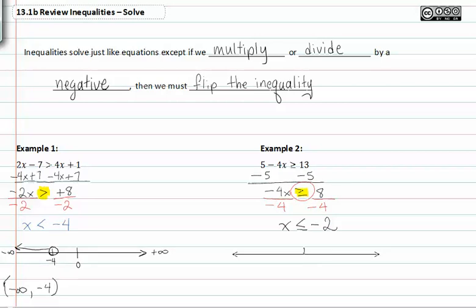Graphing our inequality, we'll call this negative two right here. If x is less than or equal to that, we're going to have to head toward negative infinity. So this will be a closed dot at negative two heading toward negative infinity.